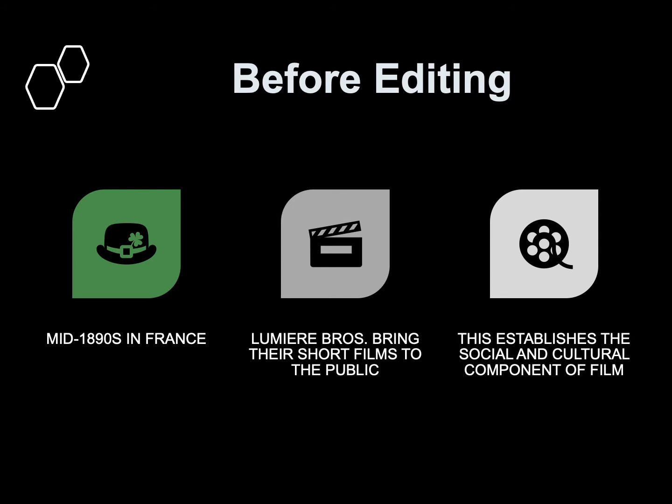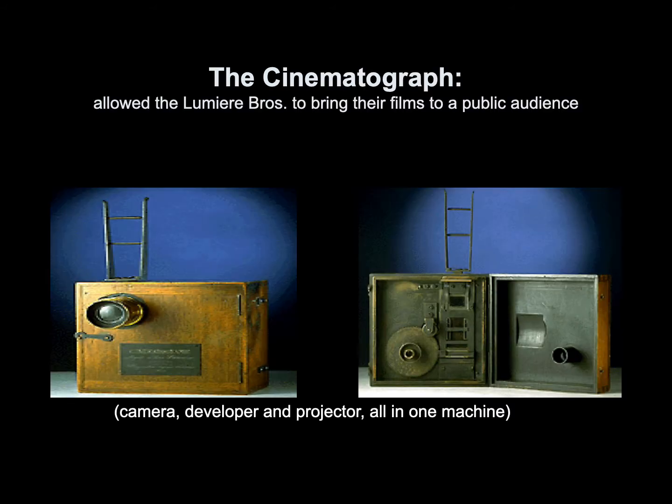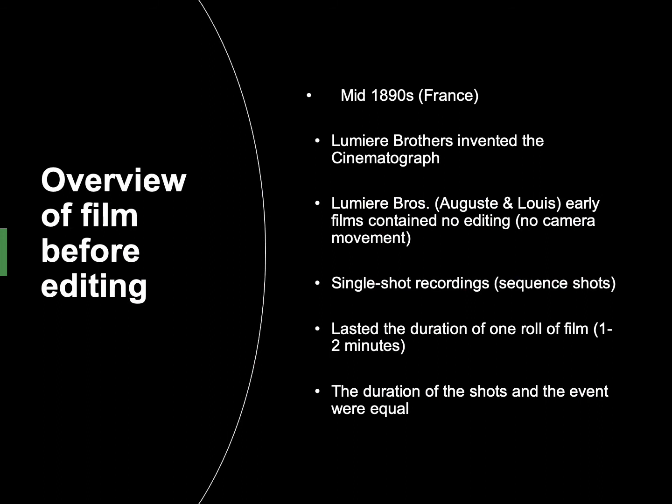Before editing, in the mid-1890s in France, the Lumière brothers brought their short films to the public, establishing the social and cultural component of film. The cinematograph allowed them to bring films to a public audience — it was a camera, developer, and projector all in one machine. Their early films contained no editing and no camera movement. They were single-shot recordings, or sequence shots, each lasting the duration of one roll of film — one to two minutes. The duration of the shots and the event were equal.